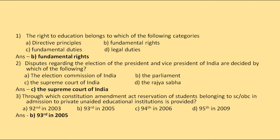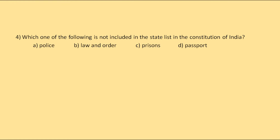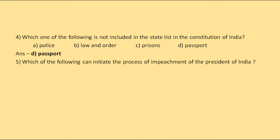Which of the following is not included in the State List in the Constitution of India? The options are police, law and order, prisons, or passport. The correct answer is passport.